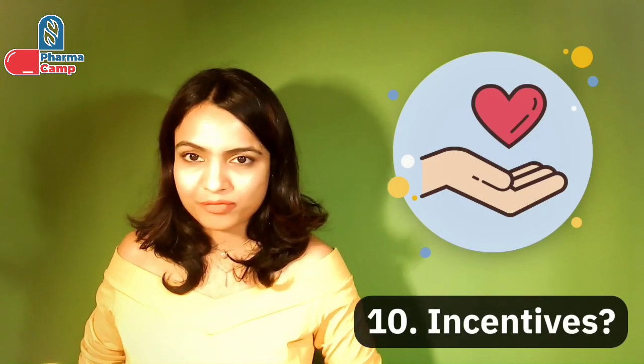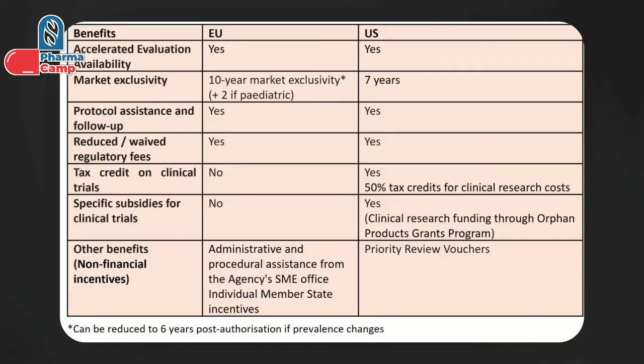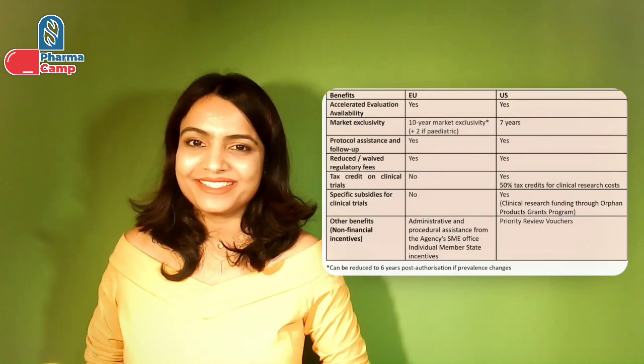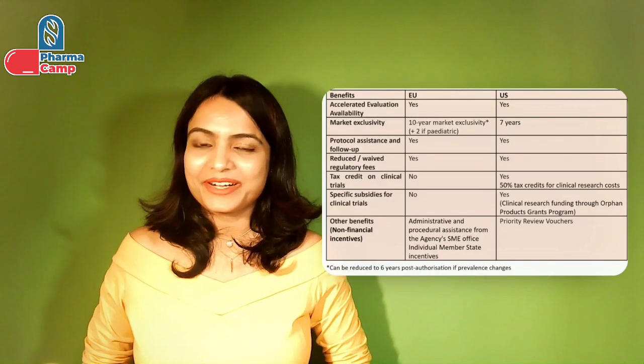The tenth and final comparison point is incentives and benefits. As shown in the figure, differences exist for tax credits, specific subsidies for clinical trials, and priority review vouchers — all of which exist in the US but not in the EU. This concludes the comparison of orphan drug regulation between the EU and the US.